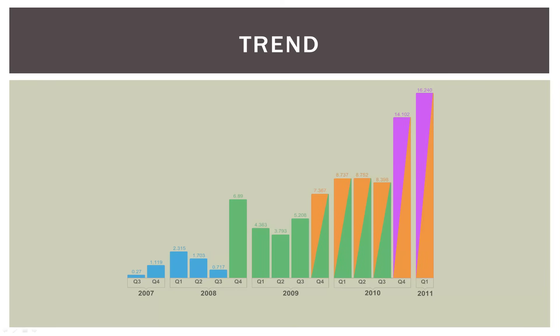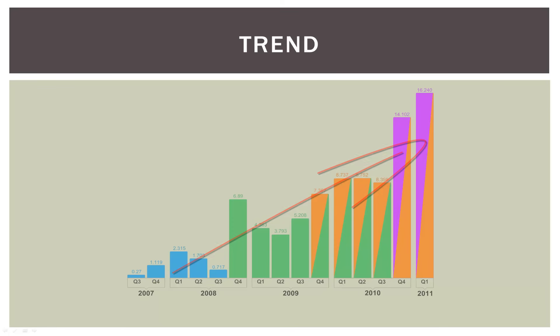Here is our iPhone sales data, and of course this is a trend — there's a trend upward. So if we were to draw a line from 2007 up through 2008, 2009 and 2010, you will see we were in a very steep upward trend in terms of iPhone sales.